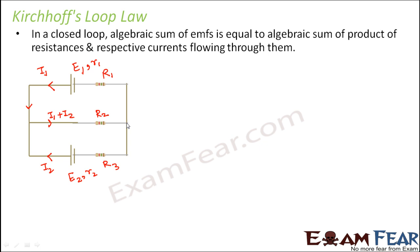When the combined current reaches the next junction, I1 moves along one line and I2 moves in another direction — I2 flows back toward E2 and I1 flows back toward E1. So this is the flow of current in this circuit.